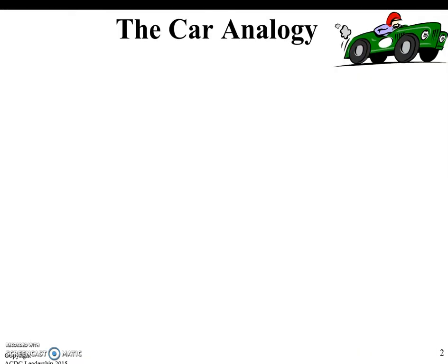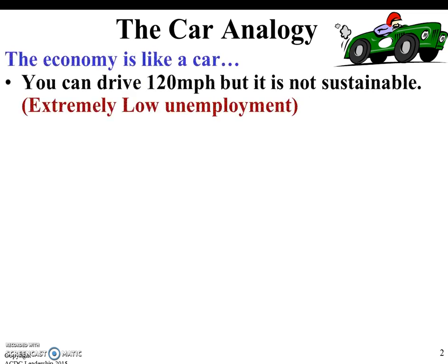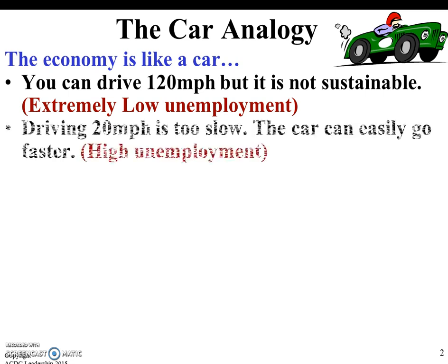To start off with fiscal policy, let's look at an analogy — specifically the car analogy. The economy is like a car. You could drive 120 miles an hour, but it's not sustainable. Making the analogy to the economy, that would be extremely low unemployment. Think about the acceptable range of unemployment being 4 to 6 percent — this would probably be somewhere around 2 percent. It's great in the sense that a lot of people are working, but it's just not sustainable, and we're setting ourselves up for a fall, which means a lot of layoffs.